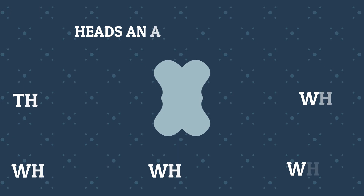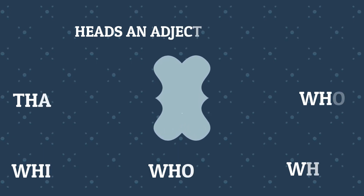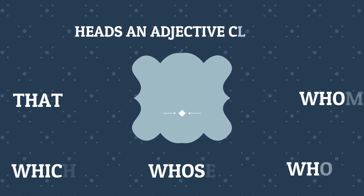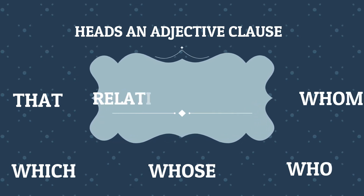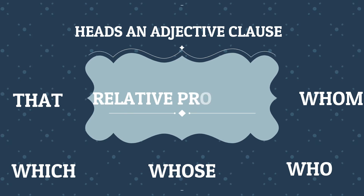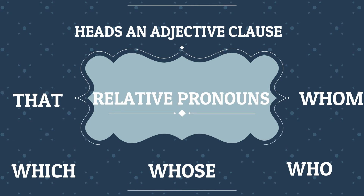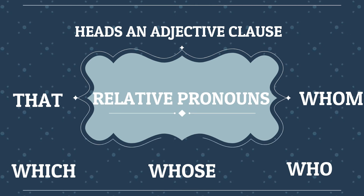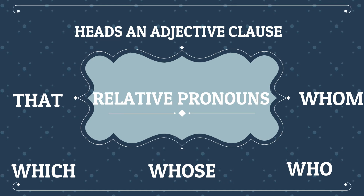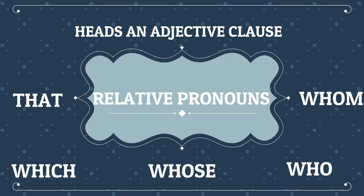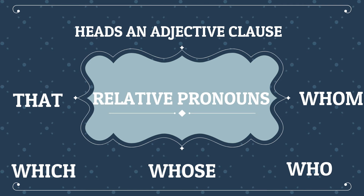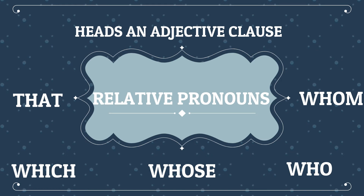Let's discuss relative pronouns. A relative pronoun introduces a relative clause — it is called a relative pronoun because it relates to the word that its relative clause modifies. There are five basic relative pronouns: who, whom, whose, which, and that. Who (subject) and whom (object) are generally only for people. Whose is used for possession. Which is for things. That can be used for things and people, but only in defining relative clauses — clauses that are essential to the sentence and do not simply add extra information.